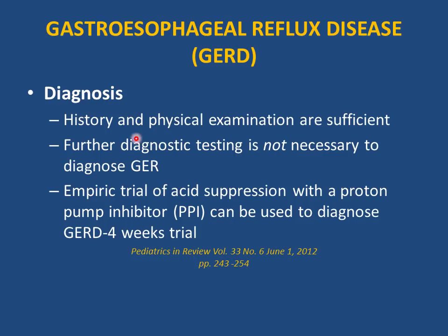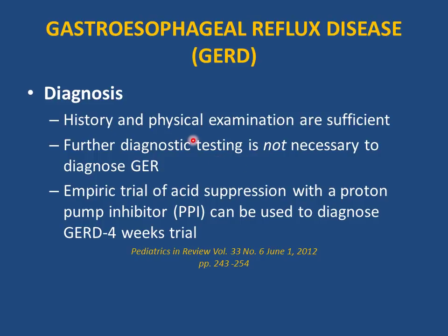Diagnosis of GERD is by history and physical examination — further diagnostic testing is not necessary. An empirical trial using a PPI for four weeks can also be diagnostic: if symptoms disappear, this confirms GERD. If parents present with gastroesophageal reflux by history and physical examination, you can treat without upper GI series or other testing.